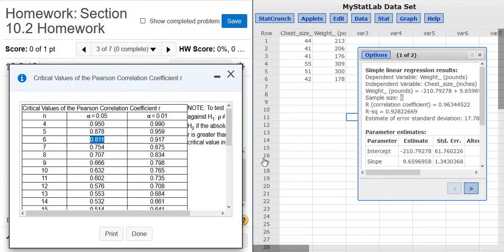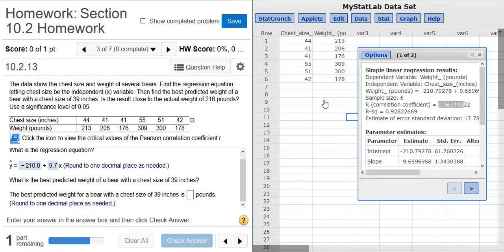So because we have a straight line pattern, we're going to use the line to make our prediction. If you don't have a straight line pattern, use the mean of the y's. So in this case, you would use the mean of the weights. But in this case, r is bigger than the critical value, so we have a straight line pattern, so we use the line to make our prediction.